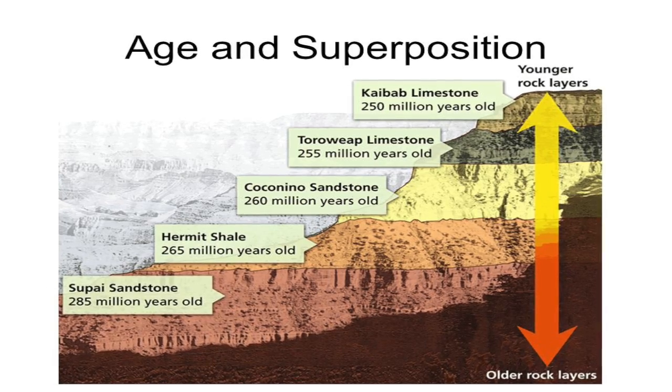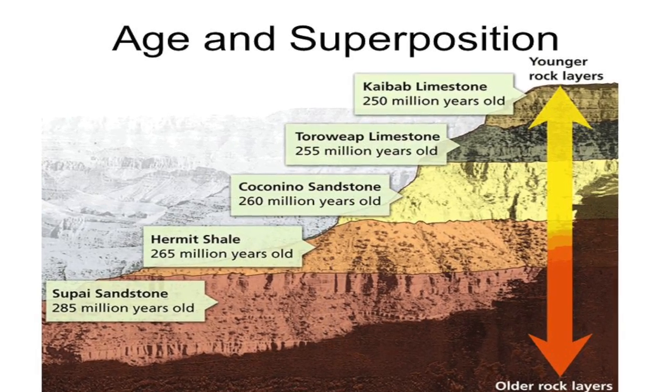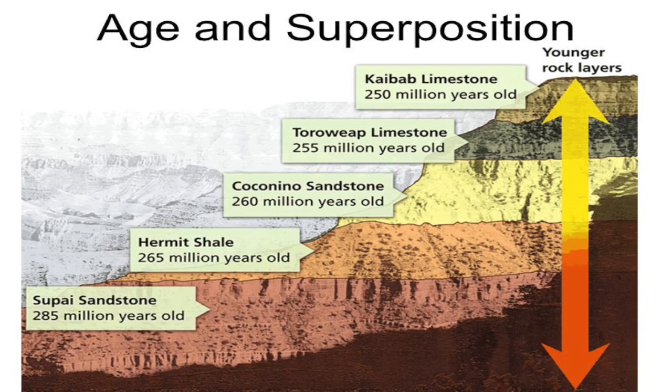Here comes big idea number one. Now that we have superposition in place and know that the guy down here is older than the guy up here, it's time to make observations about those fossils. The biggest thing is older, deeper fossils are more simple than more shallow, newer fossils, which supports the hypothesis that as time goes on, things evolved and became more complex.